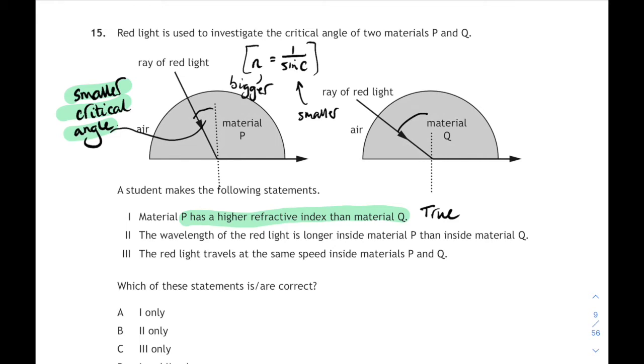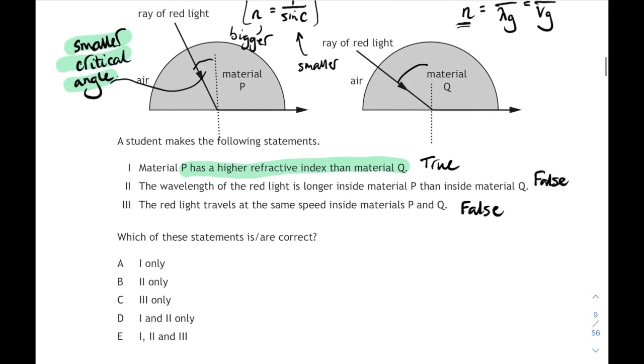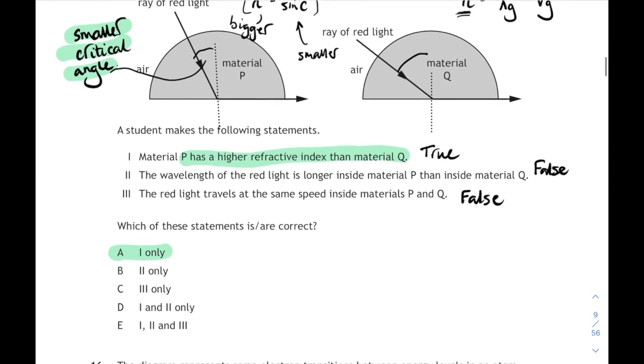Statement 2. Wavelength of red light is longer inside material P than inside material Q. Well, P has got a greater refractive index, so it's going to refract the light more. So it's going to squeeze the waves together more. So that's false. There's our full relationship for refractive index. So the higher the refractive index, the more the waves are going to be squeezed together. So the wavelength of red light will be shorter in material P. And the red light travels at the same speed inside both materials, that's false. They've got different refractive indices, so they'll travel at different speeds. So it's only one, one only. That's A.